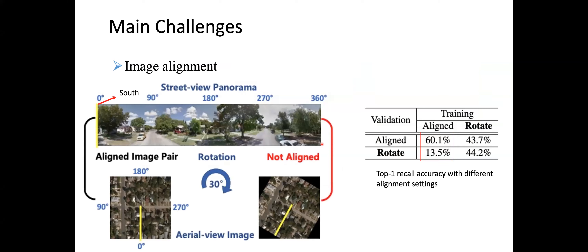Another challenge is image alignment. Most existing databases like CVUSA have alignment information, so image pairs are aligned. For the street view panorama, starting from the left, zero degrees indicates the south direction, and this corresponds to zero degrees in the aerial image. All image pairs follow this alignment. However, for real applications, a street view image may be taken at an arbitrary heading, so we may not know the alignment information.